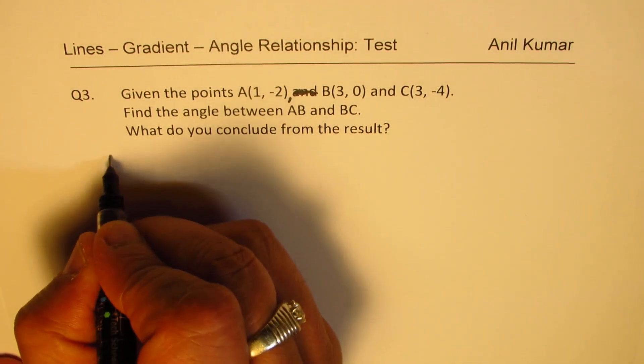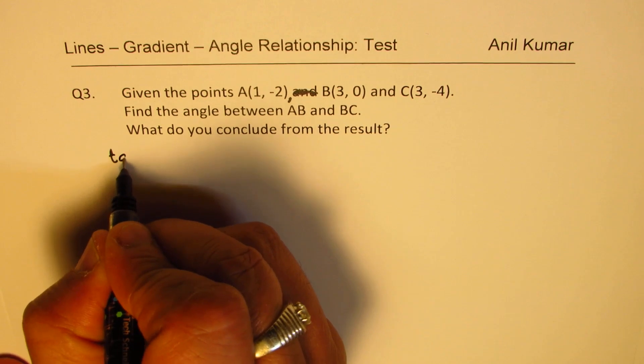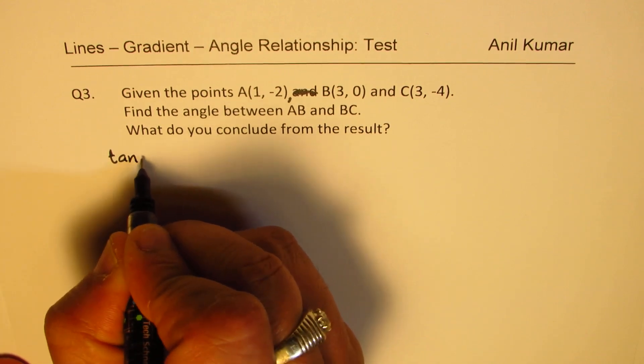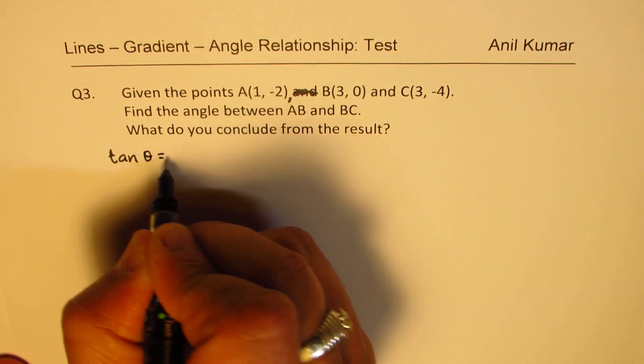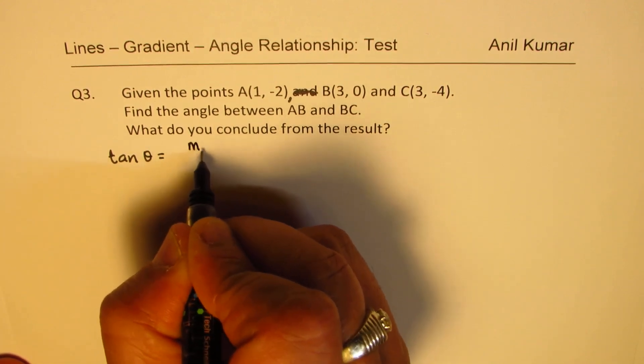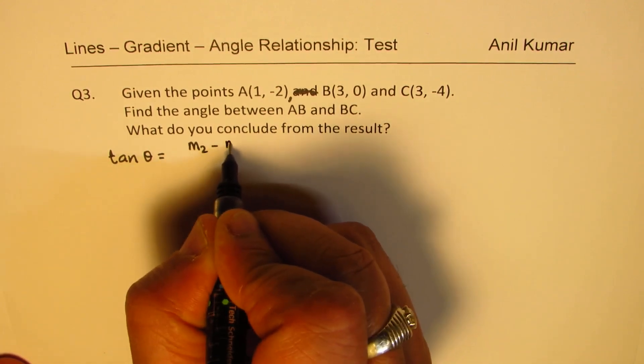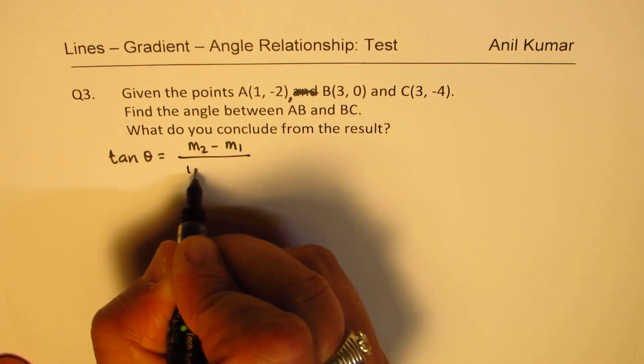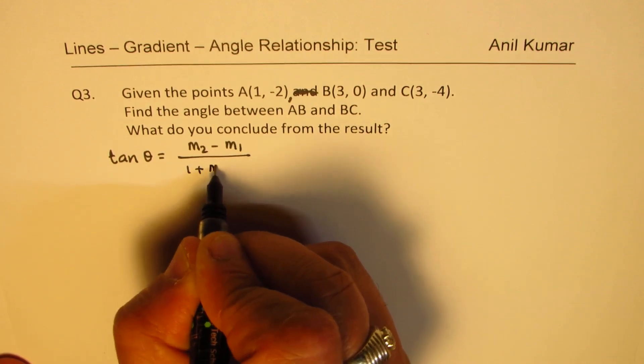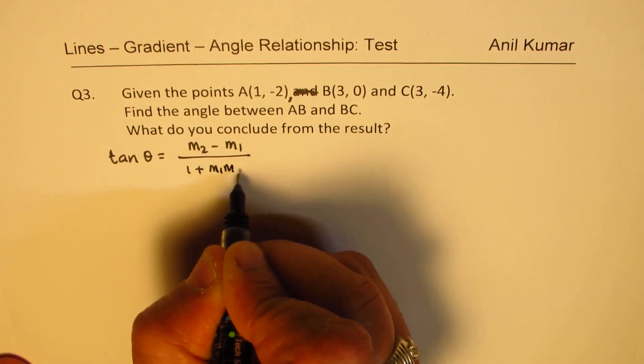The angle between two lines — the formula which we have learned is: tan theta equals M2 minus M1 over 1 plus M1 times M2.